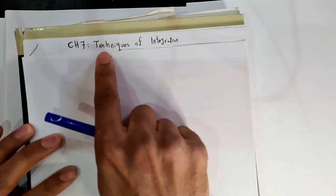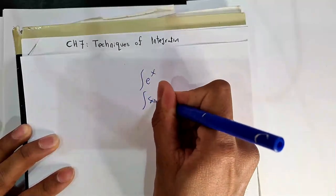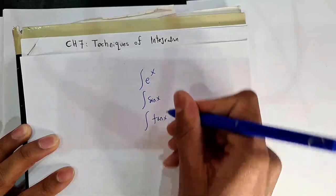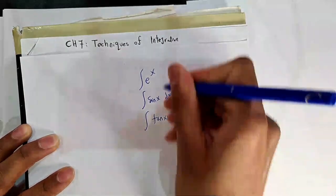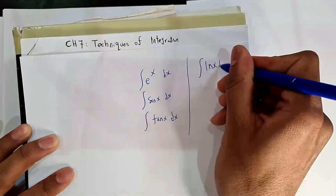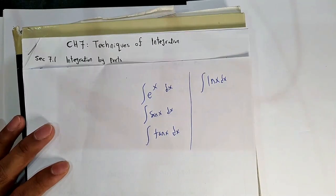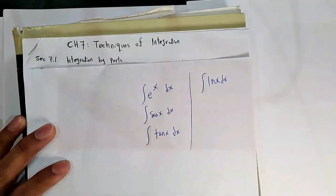As-salamu alaykum. Today we will talk about chapter 7, which is about techniques of integration. Up to now, we discussed section 5.4 and section 5.5 — the fundamental theorem of calculus and specific types of functions. For example, integral of eˣ, integral of sin(x), integral of tan(x). Now, what about the others? What about ln(x)? It is not given in the table. We will discuss it today in section 7.1: integration by parts.